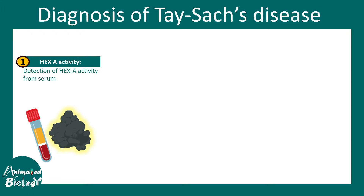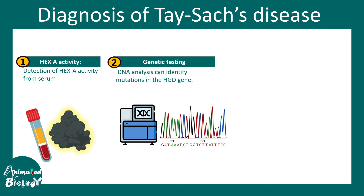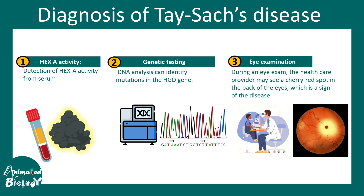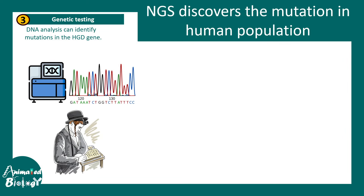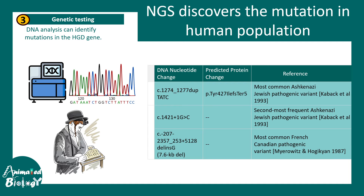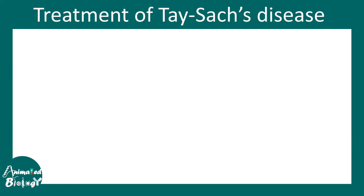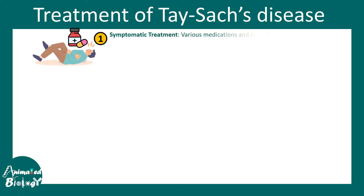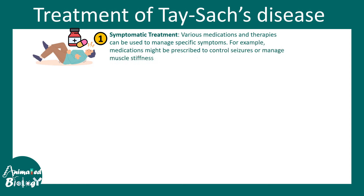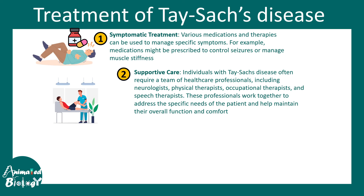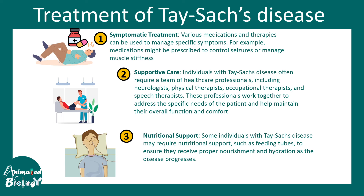Diagnosis of Tay-Sachs disease includes measuring hexosaminidase A activity reduction in patient serum, genetic sequencing, and eye examination — the healthcare provider looks for a cherry red spot on the back of the eye, which is a signature finding for this disease. NGS has identified several mutations in the population, common in Ashkenazi Jewish and French Canadian populations. Treatment is supportive: seizure management with medication, physiotherapy, speech therapy, and nutritional support.